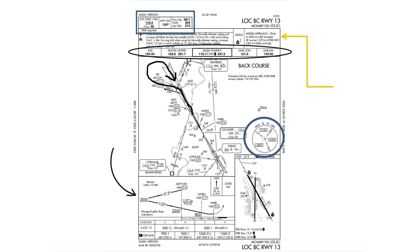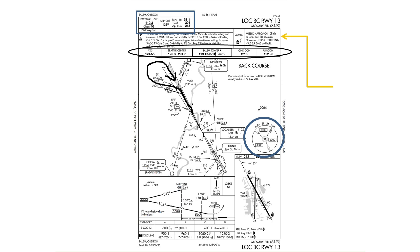The minimum descent altitude for the approach is 3,000 feet MSL and the pilot must remain within 10 nautical miles of the ISLE localizer. Two other important points when flying a localizer back course approach: the pilot should disregard glide slope indicators because the back course approach will give false glide slope indications.